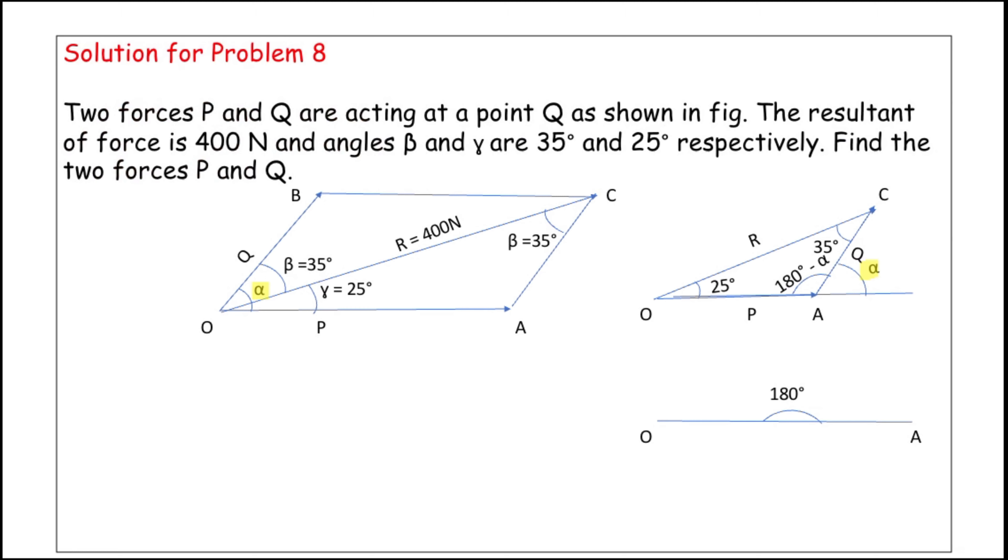And the angle between Q and R is beta, it is 35 degrees, and the angle between P and R is gamma, it is 25 degrees. Now we are going to add beta and gamma to get alpha.